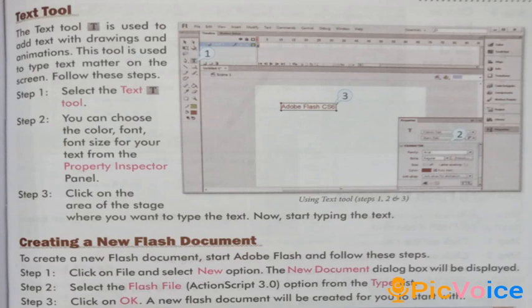Text Tool: The text tool is used to add text with drawings and animations. This tool is used to type text matter on the screen. Follow these steps. Step 1, select the text tool. Step 2, you can choose the color, font, and font size for your text from the Property Inspector panel. Step 3, click on the area of the stage where you want to type the text and start typing.